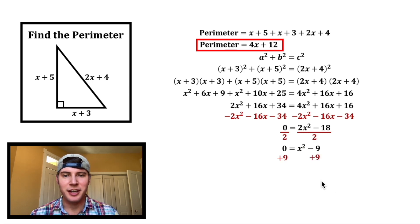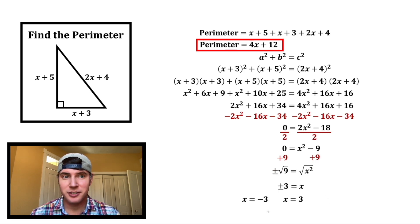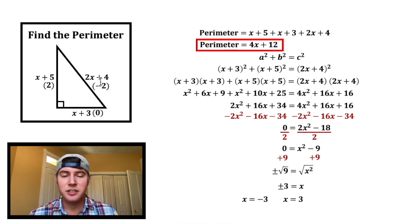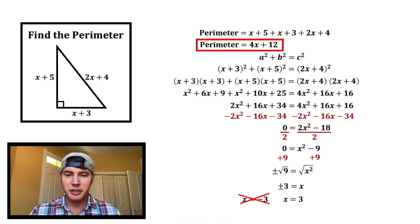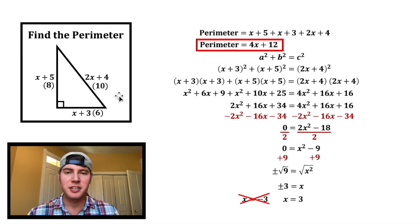Or we can add 9 to both sides, and we get 9 equals x squared. After we square root both sides, we get x equals positive 3 or negative 3. So let's check these answers. If we plug in negative 3, this becomes 2, this one would become 0, and this one would become negative 2. But we can't have negative distances, so x equals negative 3 is not possible. Now let's try x equals 3: 3 plus 5 is 8, 3 plus 3 is 6, and 6 plus 4 is 10. 8 plus 6 is 14, plus 10 is 24.